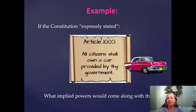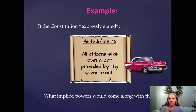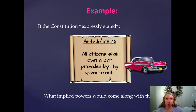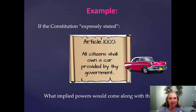For an example: if the Constitution expressly stated 'all citizens shall own a car provided by the government,' what implied powers would come along with this? I immediately thought — what kind of car? A toy car, or a big car parked in a garage that you drive down the road? Does that also mean you need a driver's license? Can you drive it, or just own it? Who pays for the upkeep? All of those things would fall under the implied powers rooted in that expressed power.